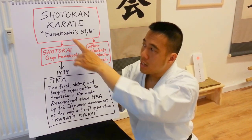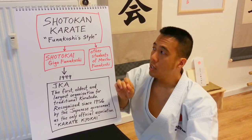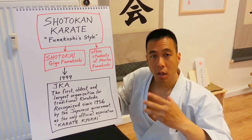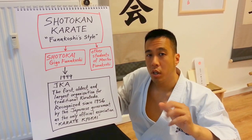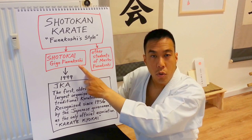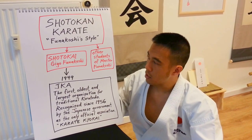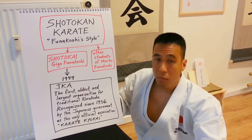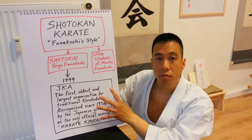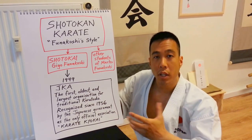Shotokan Karate translates as Funakoshi's style. Gichin Funakoshi had a pen name as a poet and calligraphy artist — it was Shoto. Sho means pine tree, to means wave. It comes from a line in one of his poems where he says the sound of the wind moving through the pine trees in the mountains sounded like the waves at the beach. One of his three sons, Yoshitaka Gigo Funakoshi, died at the end of the Second World War, around 1945 or 1946. His student Masatoshi Nakayama became one of the founders and first chief instructor of the JKA, Japan Karate Association, founded in 1949 with Master Gichin Funakoshi as the honorary head.